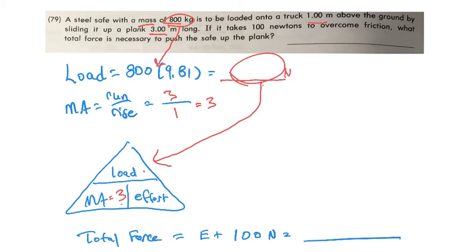Now we're not quite done because this says it takes 100 newtons just to overcome friction, and then any force beyond that is what's used to actually push it up. So the effort that you found was after you've overcome friction and you're moving it up the ramp. So we have to take this number, we'll call that the effort, add the 100 newtons to that, and then that will be the total force, which is what we're asked to find necessary to push the safe up the plank.